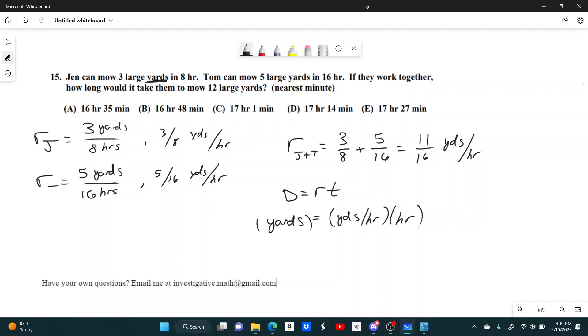And so the time it would take them in hours is just the number of yards divided by the yards per hour. This gives you hours. So all we have to do is take 12 yards, that will be 12 divided by 11 sixteenths, and that would give you the answer in hours.